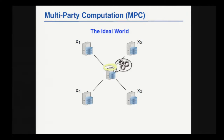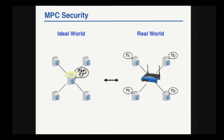The dream scenario is if the parties would have access to a fully trusted third party that takes their inputs and does the computation for them. Of course, in reality we don't want to assume such a fully trusted party, but what we do assume is that parties can communicate over some communication network, for example the internet. And roughly speaking, MPC requires that the parties can emulate the behavior of this ideal evaluation with the trusted party by running a protocol where they exchange messages over this network.